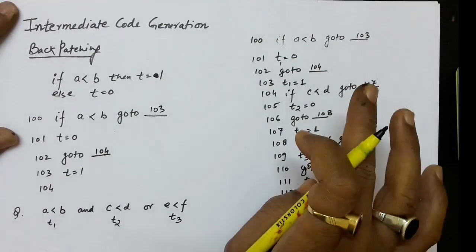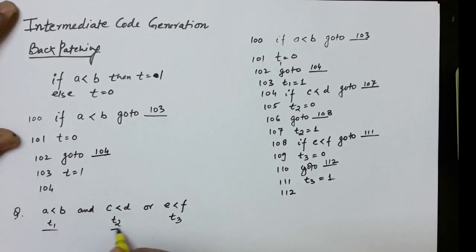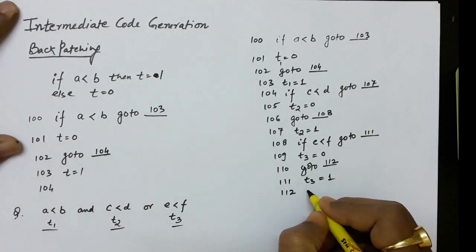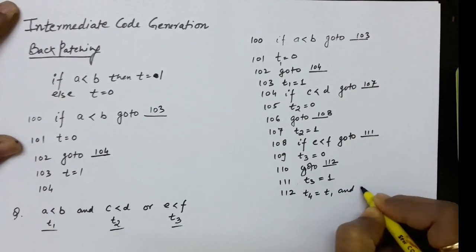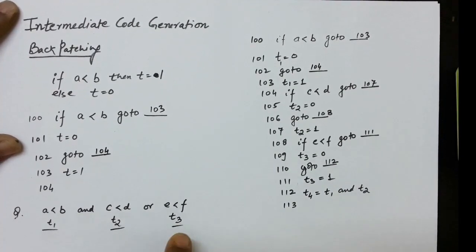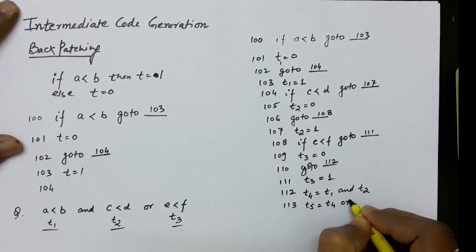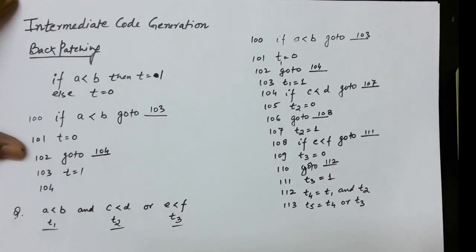Up to now we have set the statements for t1, t2, and t3. We now have to combine them: AND is applied between t1 and t2, and OR is applied between that result and t3. Since AND has higher precedence than OR, at label 112 we write t4 = t1 AND t2, and then t5 = t4 OR t3. This is how backpatching is done for if constructs.